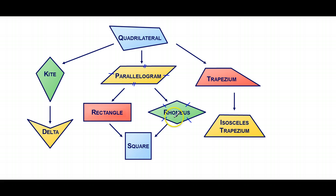And at the bottom we've got square, which is kind of like a special rhombus and a special rectangle. It's a special rectangle because it's got all 90 degrees, and it's a special rhombus.